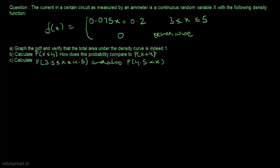In this lecture I am going to solve this question. The current in a certain circuit as measured by an ammeter is a continuous random variable x with the following density function. In part a we have to graph the PDF and verify that the total area under the density curve is indeed 1.